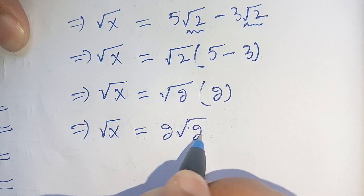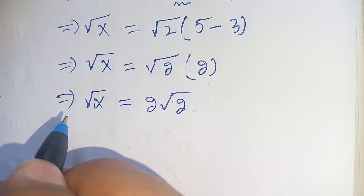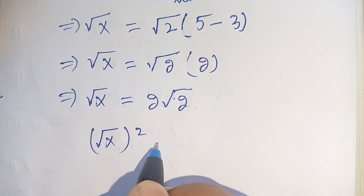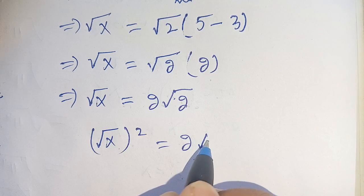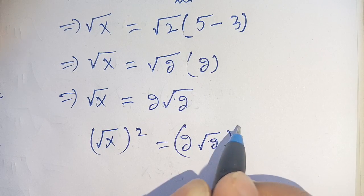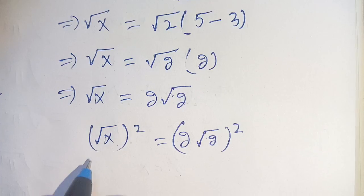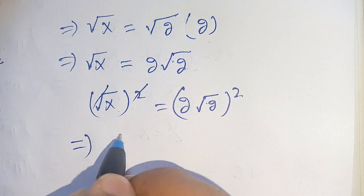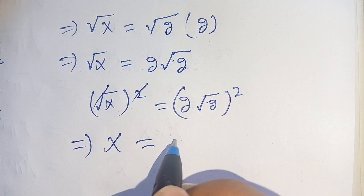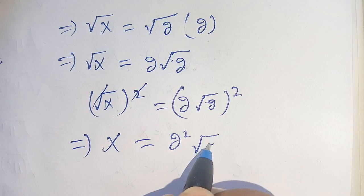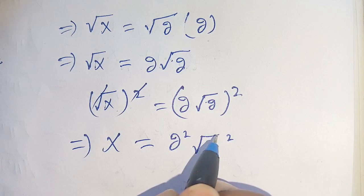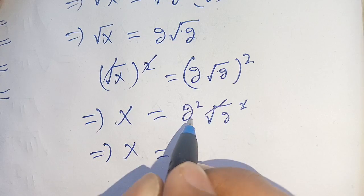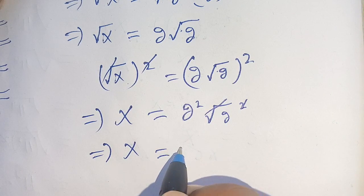Squaring both sides, we get x equals (2 times square root of 2) squared, which gives x equals 2 squared times (square root of 2) squared. We cancel the square and the square root to get x equals 4 times 2.